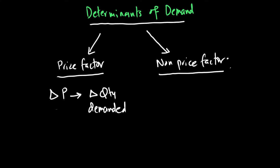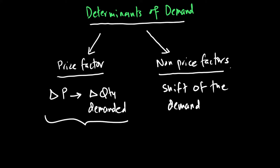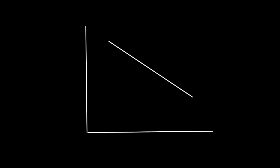Non-price factors will result in the shift of the demand curve. When you look at price factors, they cause a movement along the demand curve, while non-price factors result in a shift of the demand curve. Before I talk about the factors that cause a shift, I want to show you how the shift looks. When the demand curve shifts to the right, we say demand is increasing.